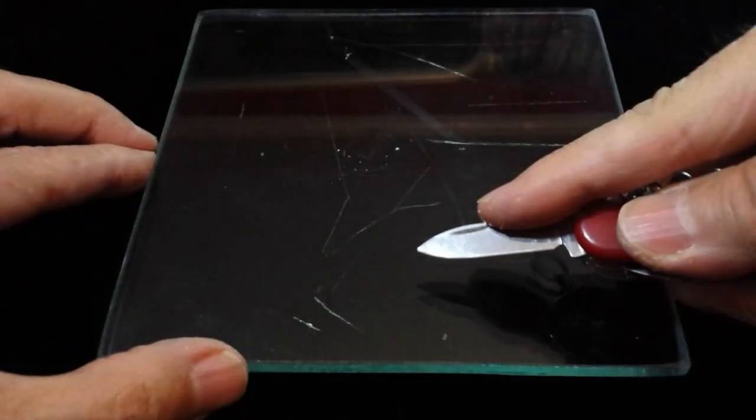If instead an object were softer than glass, then it would not leave a scratch on the plate, no matter how hard you might push the object against the glass plate.